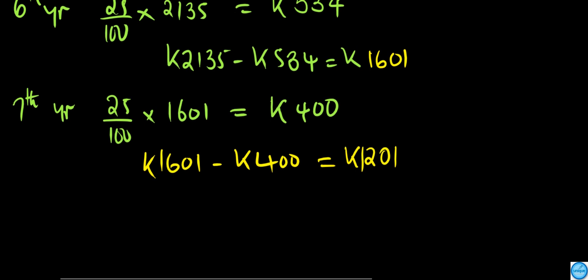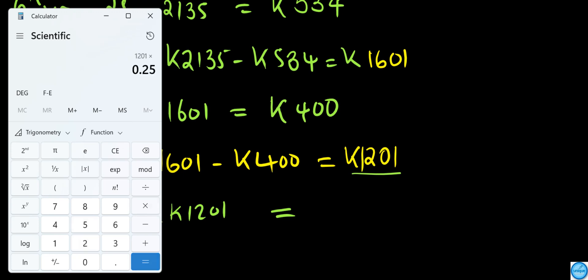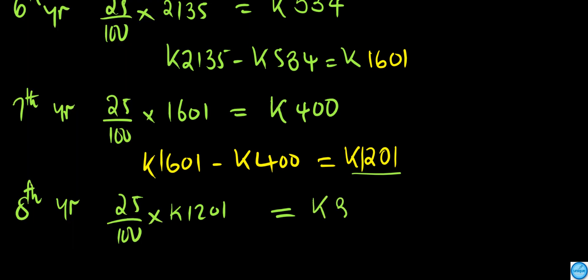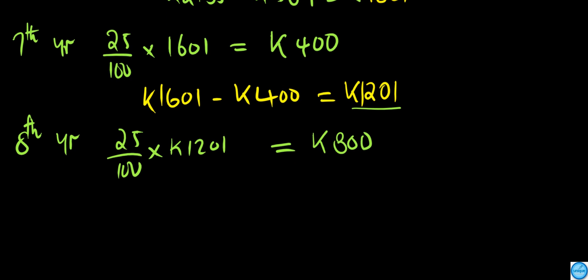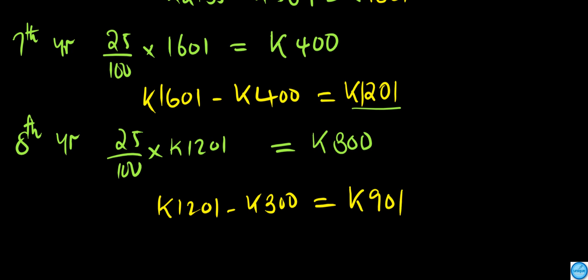In the eighth year, we find 25% of 1,201. Multiplying 1,201 by 0.25 gives 300, which is the depreciation in year eight. So the cost at the end of year eight is 1,201 minus 300, which equals 901. So 901 is the book value at the end of year eight.